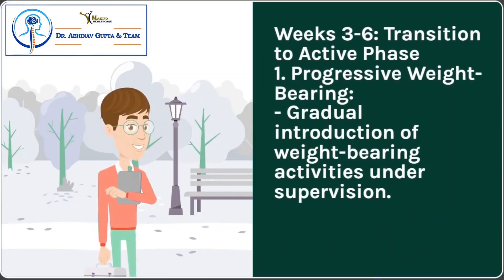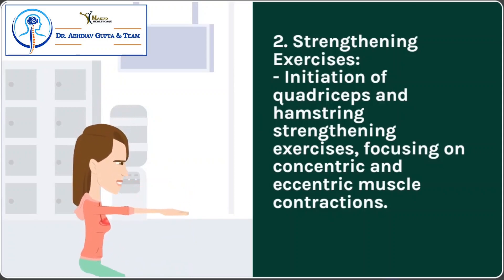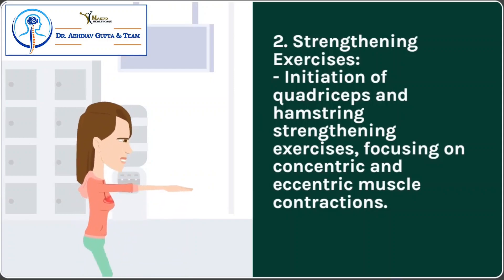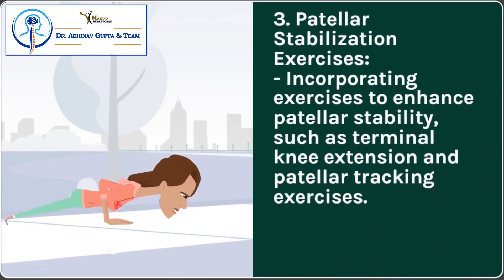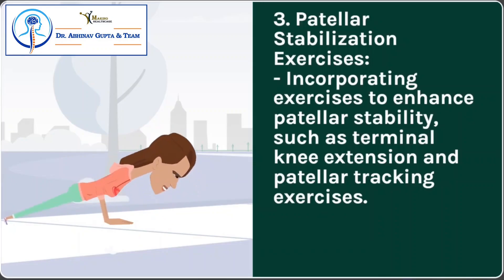Weeks 3 to 6 – Transition to Active Phase: 1. Progressive weight bearing – gradual introduction of weight-bearing activities under supervision. 2. Strengthening exercises – initiation of quadriceps and hamstring strengthening exercises, focusing on concentric and eccentric muscle contractions. 3. Patellar stabilization exercises – incorporating exercises to enhance patellar stability, such as terminal knee extension and patellar tracking exercises.